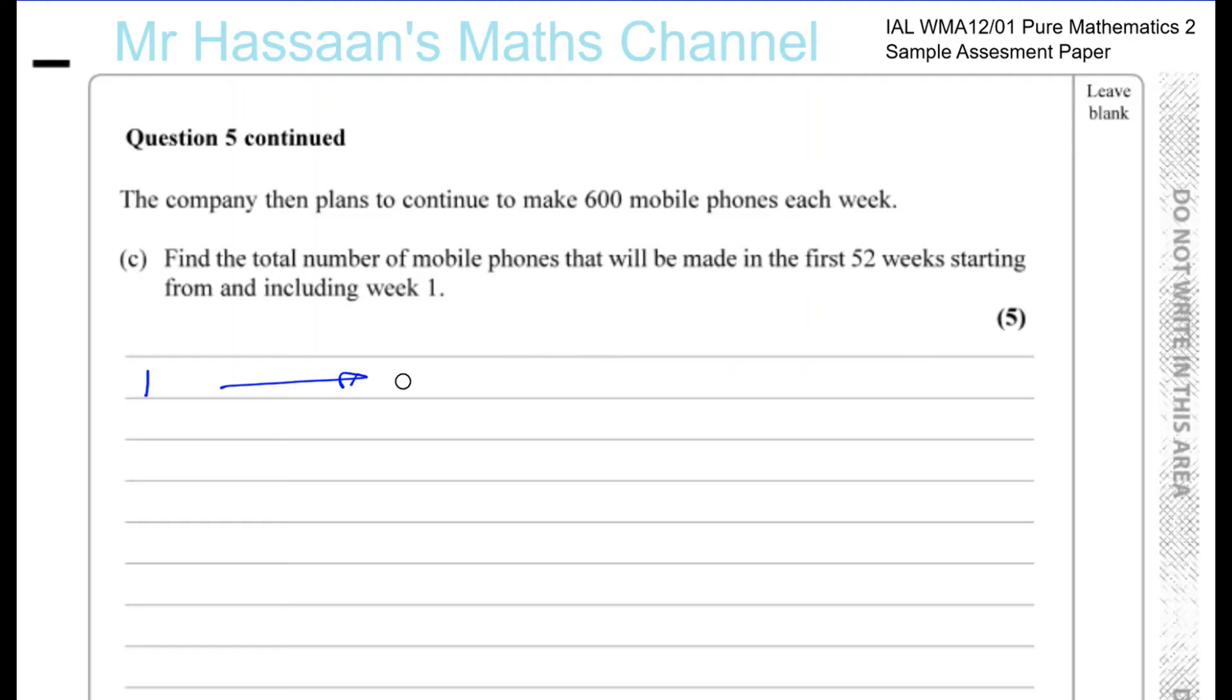From week 1 to 21, you have week 1 with 200, week 2 with 220, week 3 with 240, up to week 21 where we worked out 600. Then from week 22 up to week 52, it's going to be 600, 600 all the time. So we need to work out first the sum of the first 21 terms.